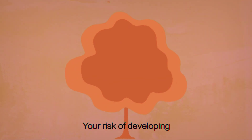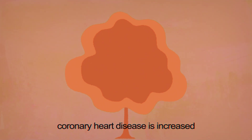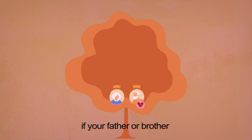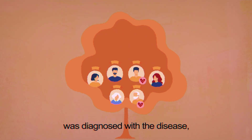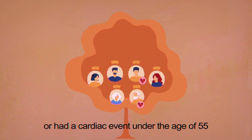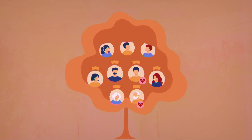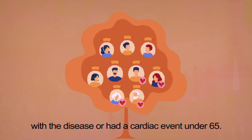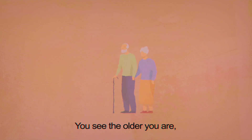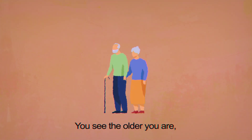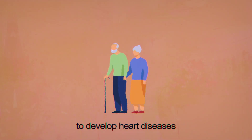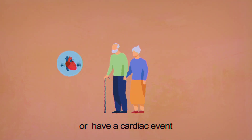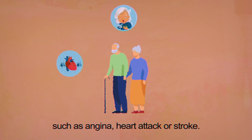Your risk of developing coronary heart diseases is increased if your father or brother was diagnosed with a disease or had a cardiac event under the age of 55. The older you are, the more likely you are to develop heart diseases or have a cardiac event such as angina, heart attack, or stroke.